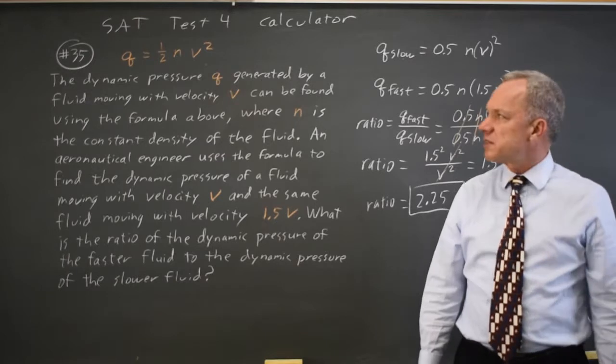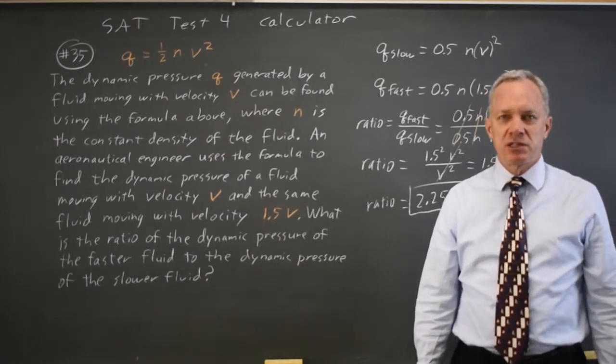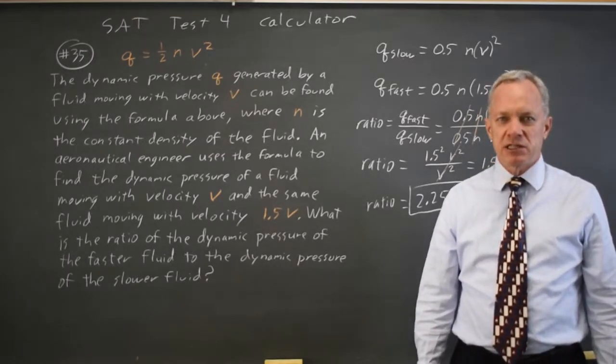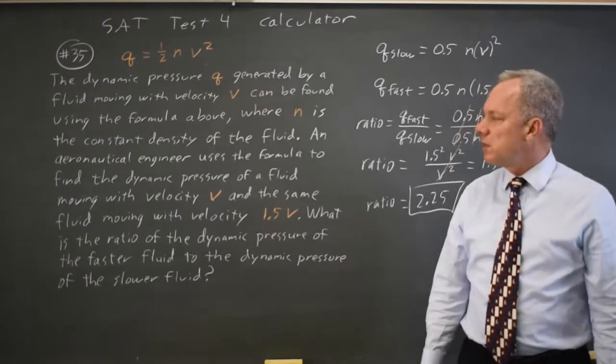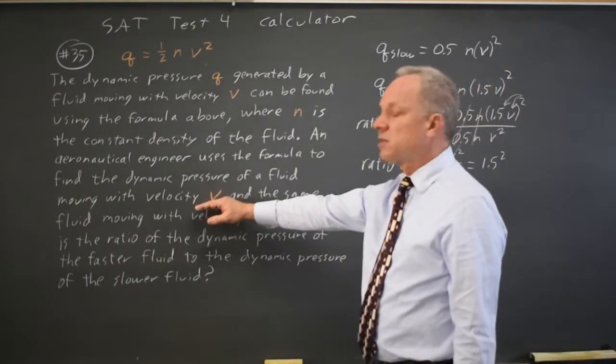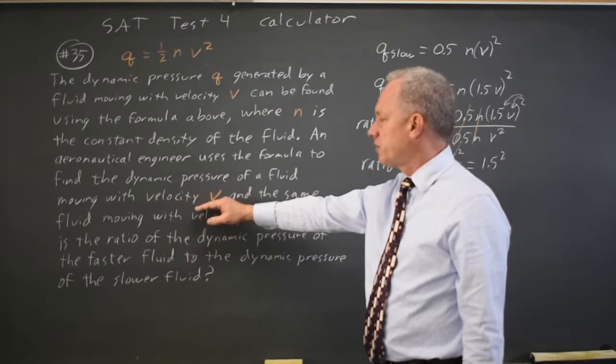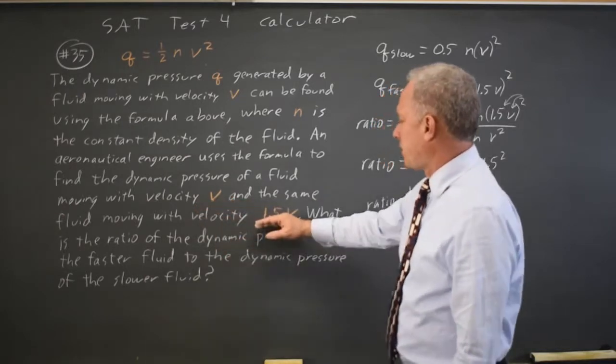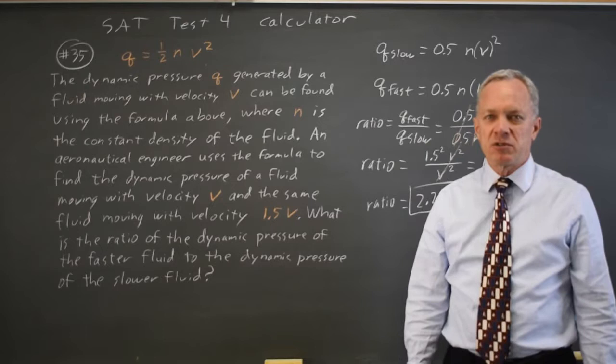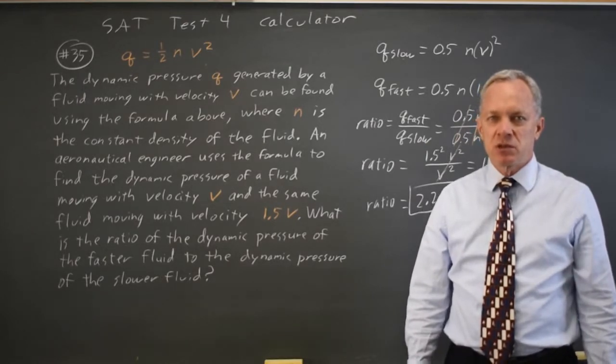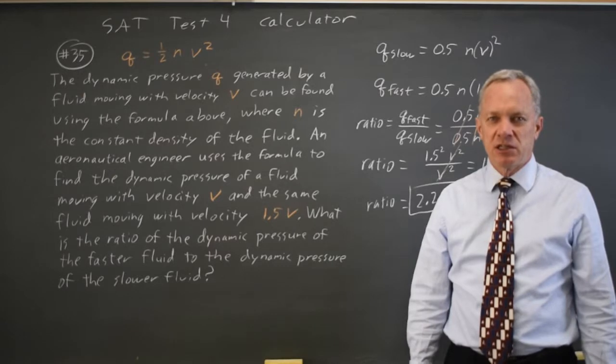The College Board often asks us to apply equations like this based on changes in the conditions, where we have an abstract quantity like velocity V rather than a specific velocity, and another abstract quantity relative to the first one. So make sure this makes complete sense to you, because you are likely to see it on your SAT. And come back soon for my next video.